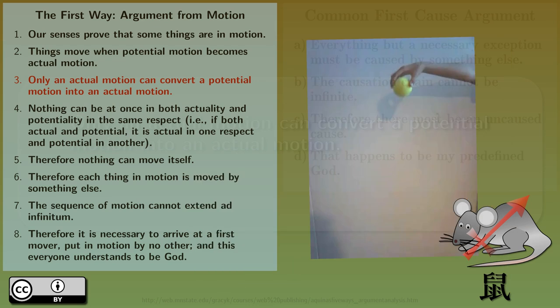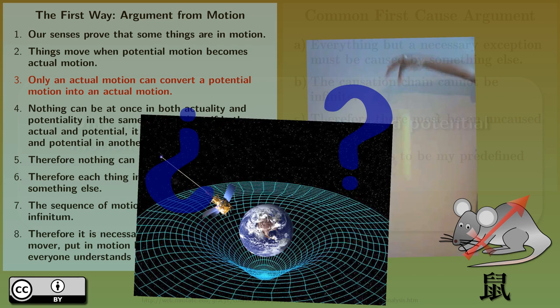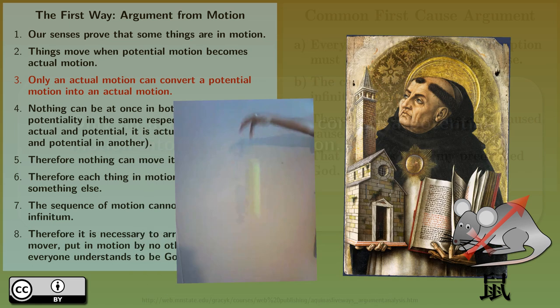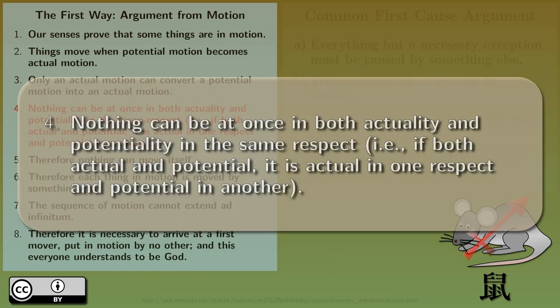If I hold a tennis ball with my hand and I open my hand, the ball falls. The potential motion of the ball became an actual motion. But which motion converted the potential motion of the ball into an actual motion? Was it my fingers moving away from the ball? Or was gravity, a geometrical feature of space-time caused by the existence of the massive Earth? Even from Aquinas' perspective, falling objects could be seen as an exception of this premise.